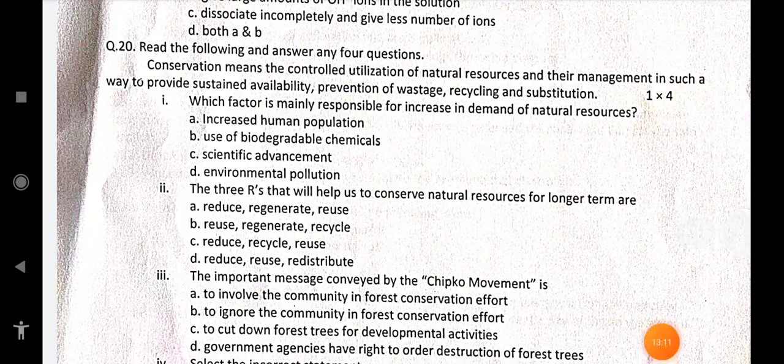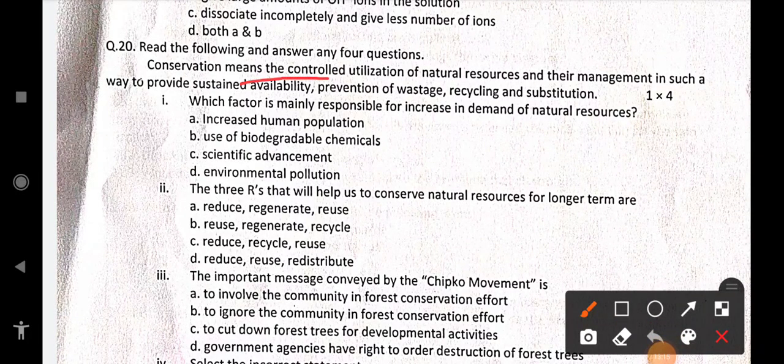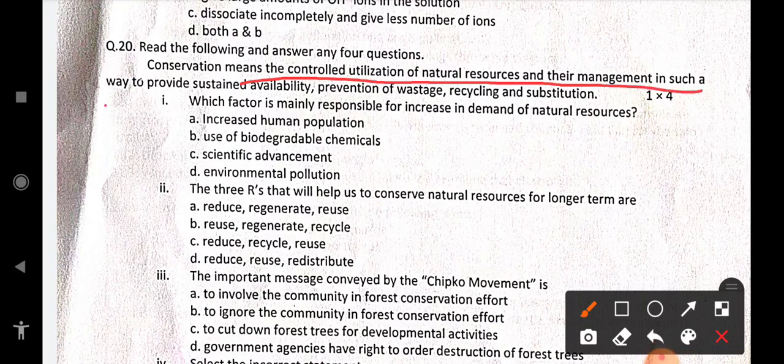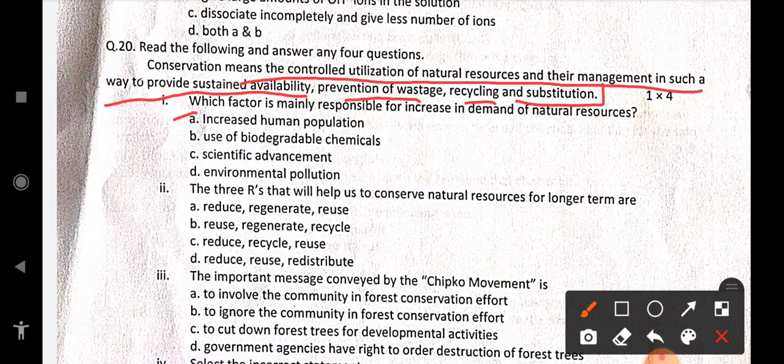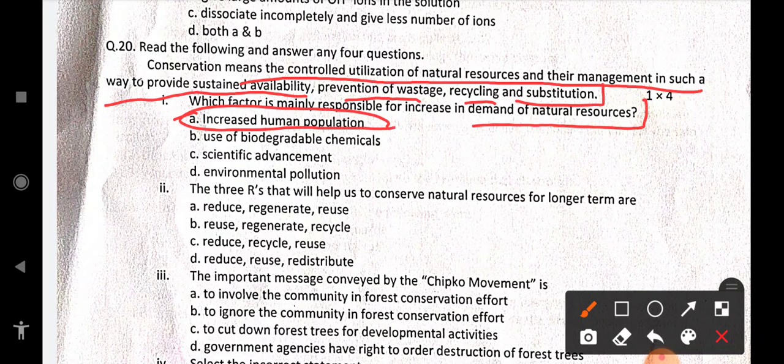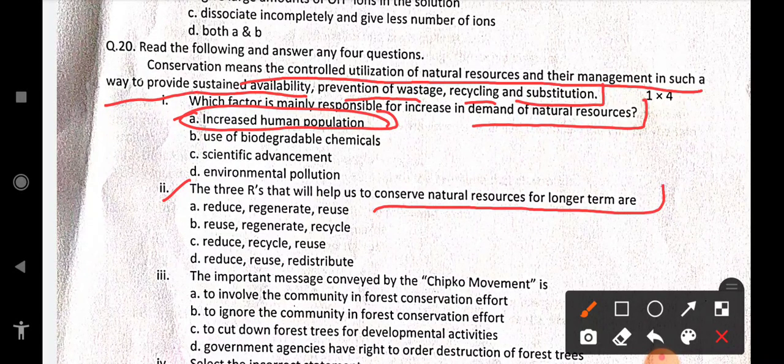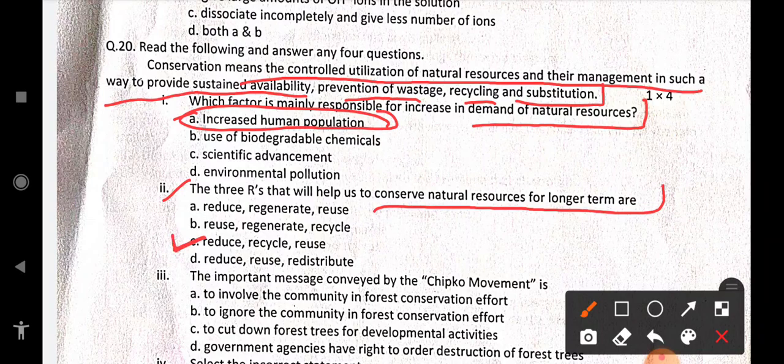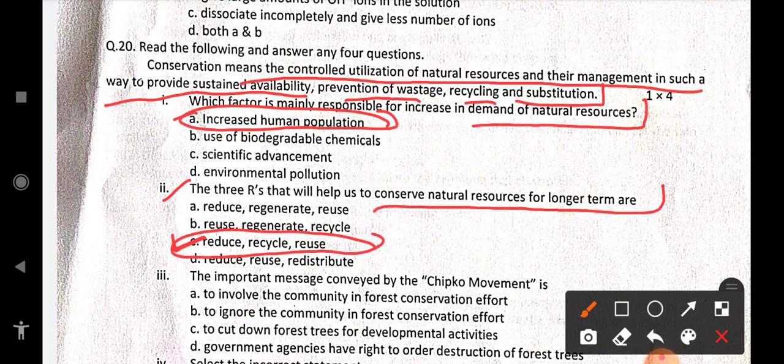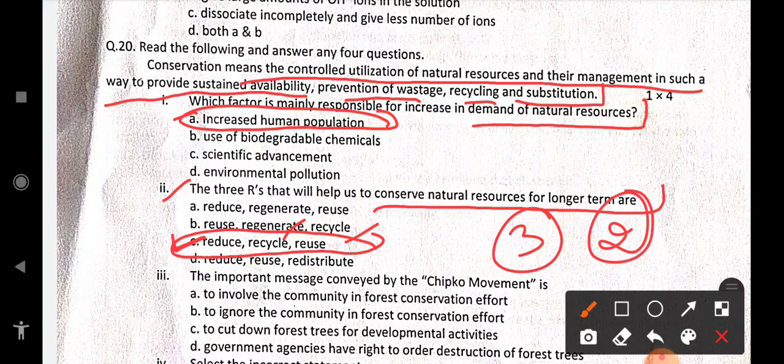Question number 20. Conservation means the controlled utilization of natural resources and their management in such a way to provide sustained availability, prevention of wastage, recycling and substitution. The three R's that will help us to conserve natural resources for longer term are reduce, recycle and reuse. This is the answer for that particular question. Reduce, recycle and reuse. And it is one of the important questions. This question may be asked for three marks or two marks. Here it came for one mark. But they may ask you about the definitions and all.